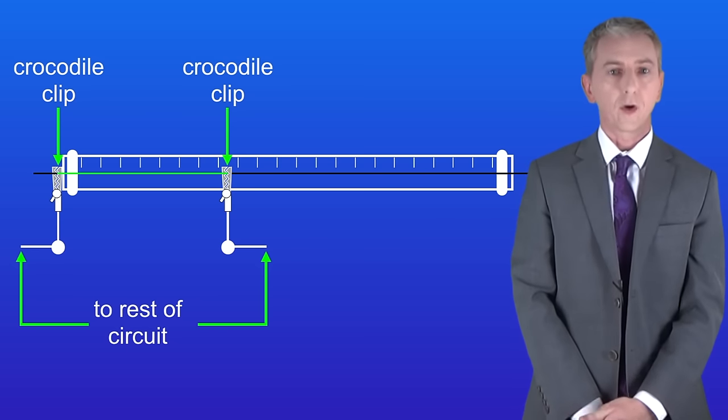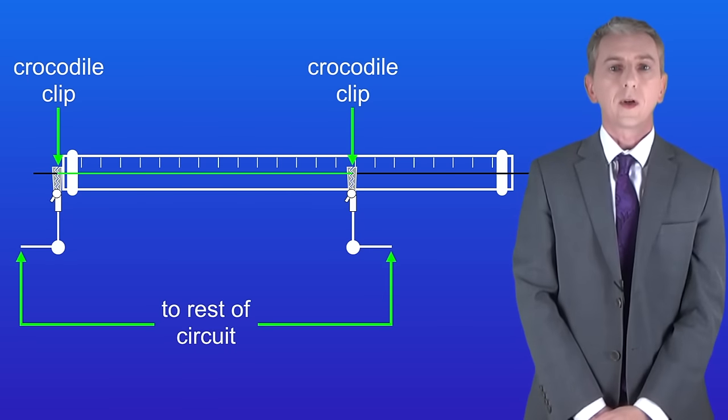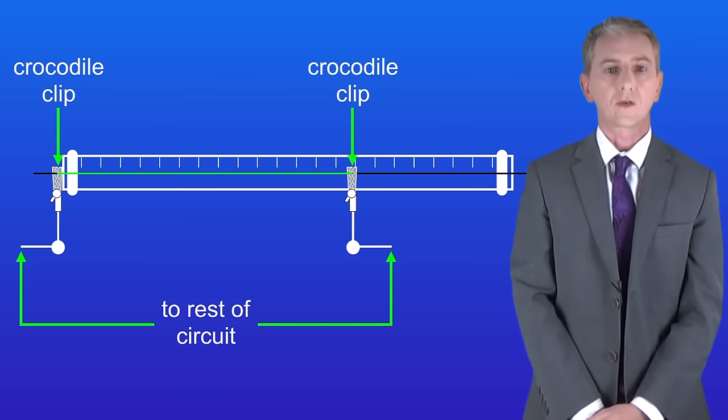Now I can move the crocodile clips further apart to increase the length of the wire in the circuit like this. So now I can change the length of the wire and measure the resistance in the circuit.